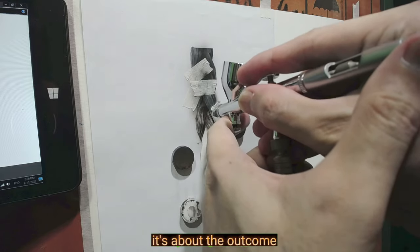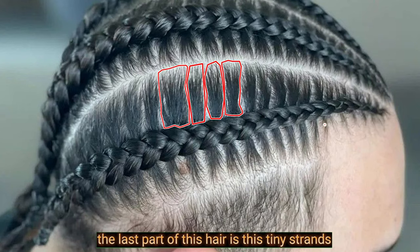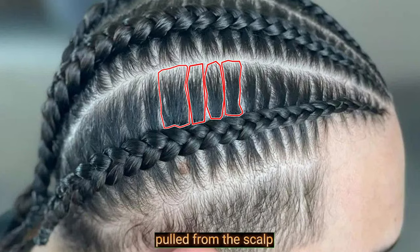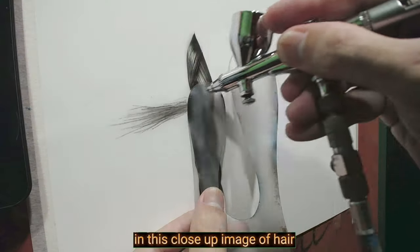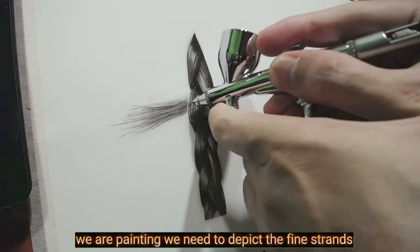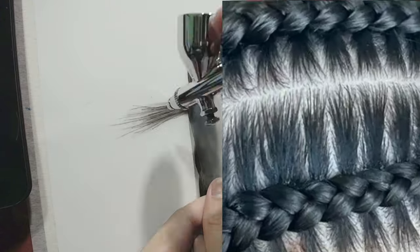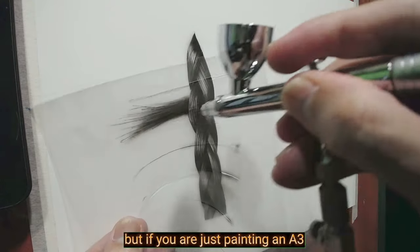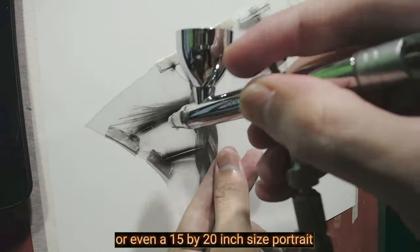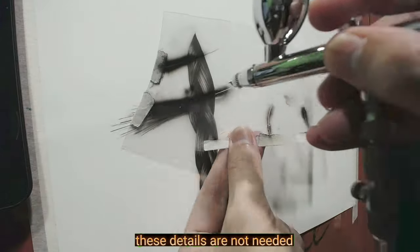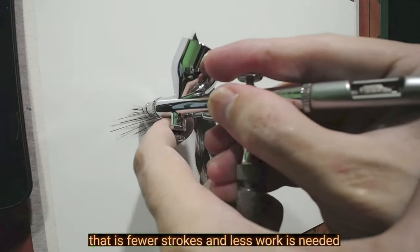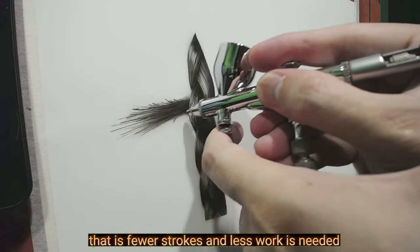It's about the outcome. The last part of this hair is these tiny strands pulled from the scalp. In this close-up image of hair we are painting, we need to depict the fine strands. But if you are just painting an A3 or even a 15 by 20 inch size portrait, these details are not needed. That is, fewer strokes and less work is needed.